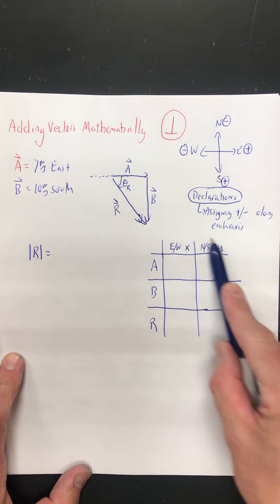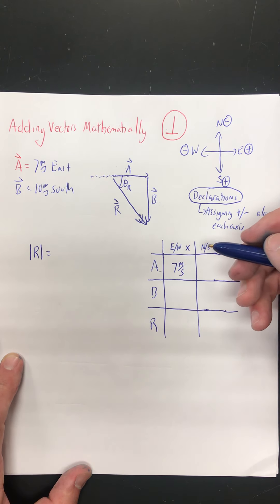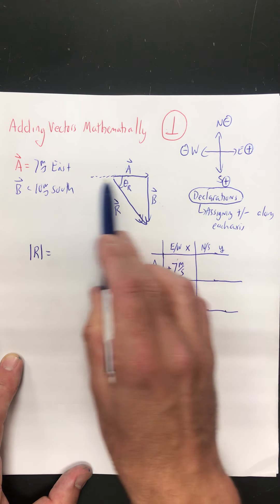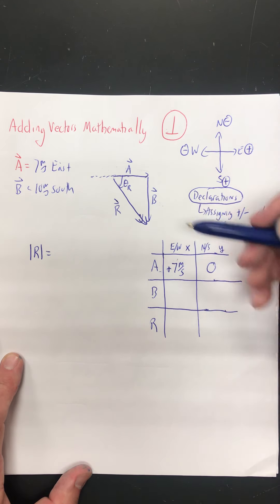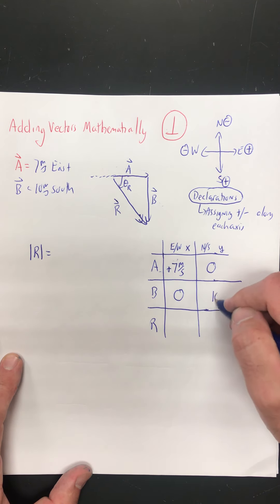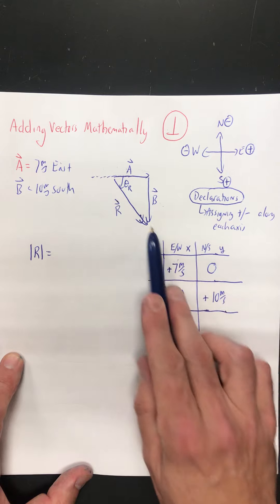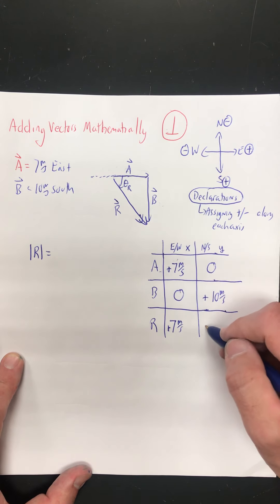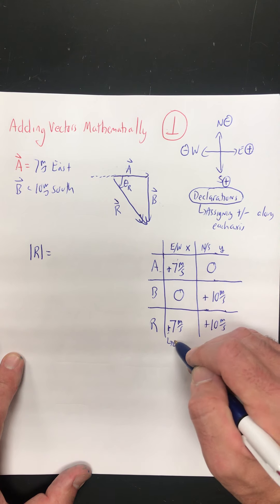So on the table: vector A — how much of it goes in the x-direction? Well, 7 meters per second, and it's east, which is the positive x-direction. How much of vector A goes in the north-south direction? None of it. Vector B — how much goes east-west? None. How much goes north-south? All of it, and it goes in the positive south direction. So vector R goes positive 7 meters per second horizontally and positive 10 meters per second vertically — east that much and south that much — which matches our picture.